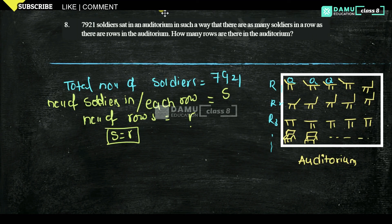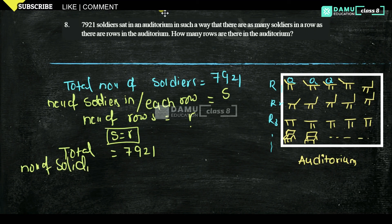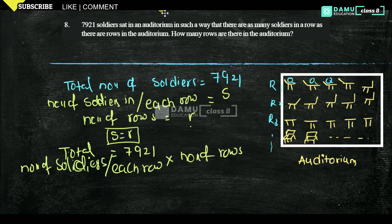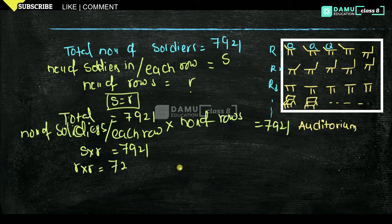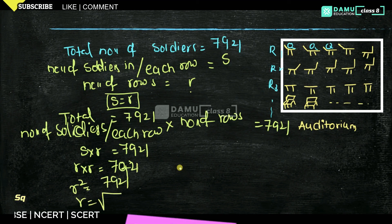So total soldiers equals number of soldiers in each row multiplied by number of rows, which equals 7921. That means S into R equals 7921. Since S equals R, substituting gives R into R equals 7921, so R squared equals 7921, and R equals the square root of 7921.